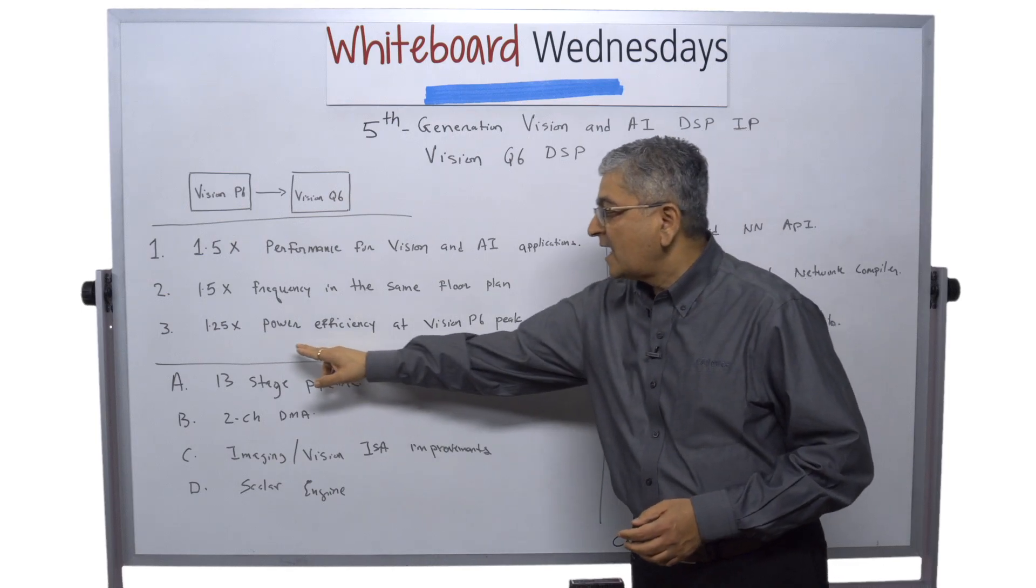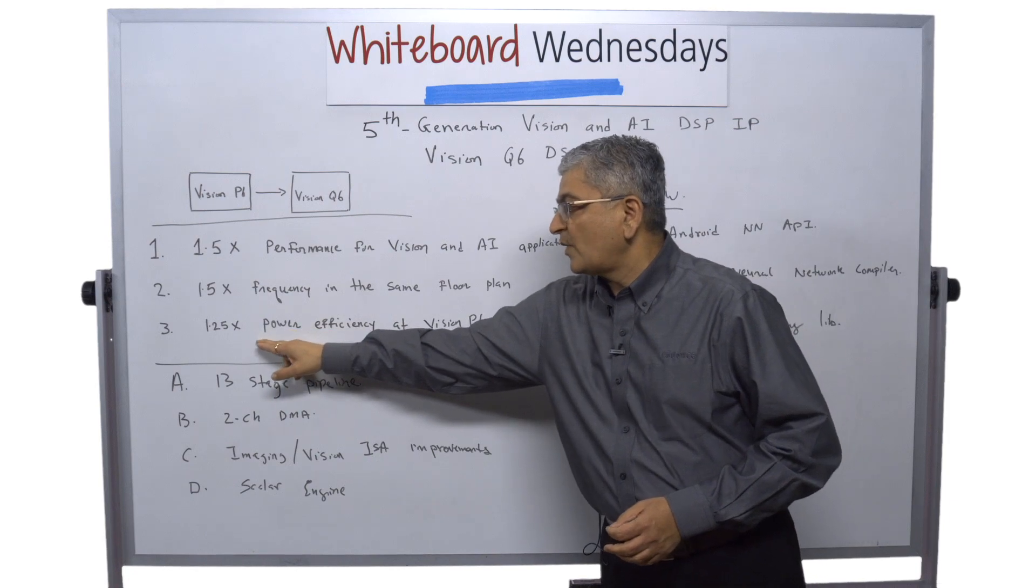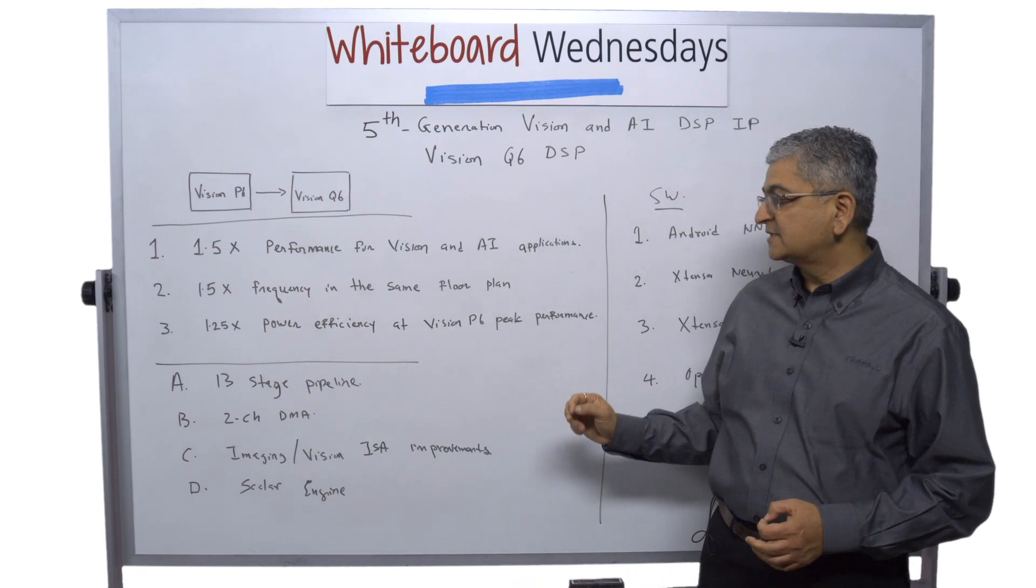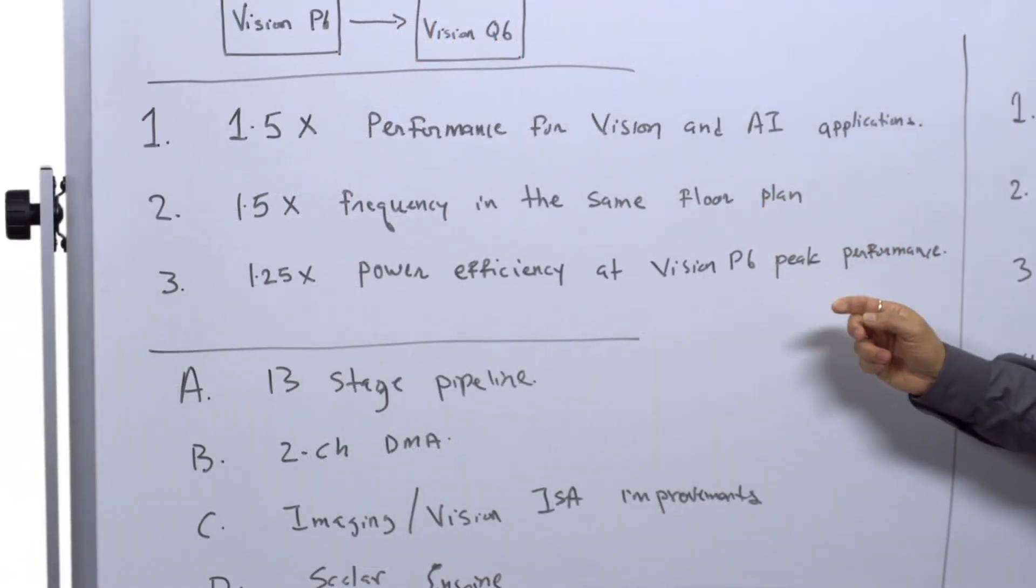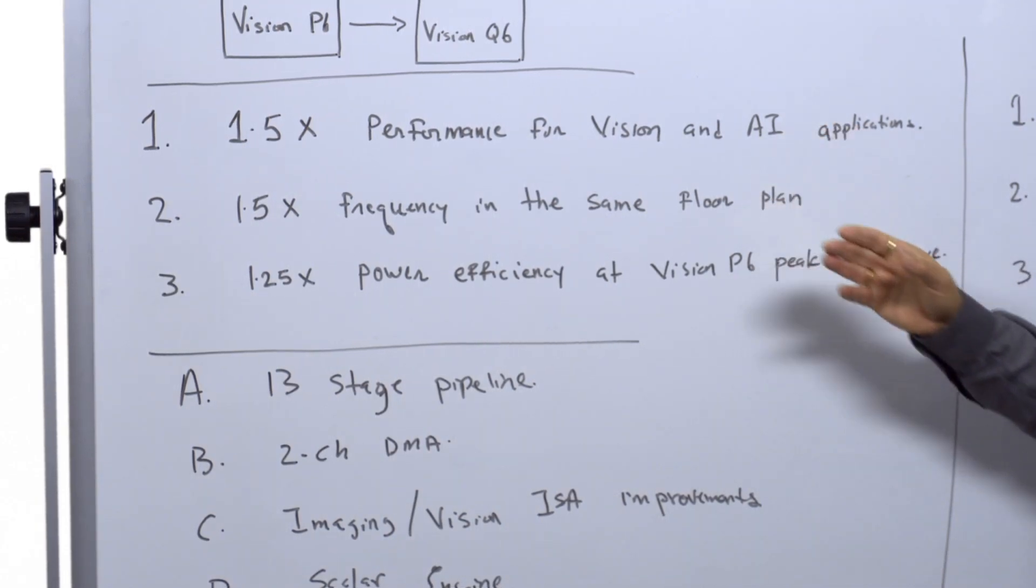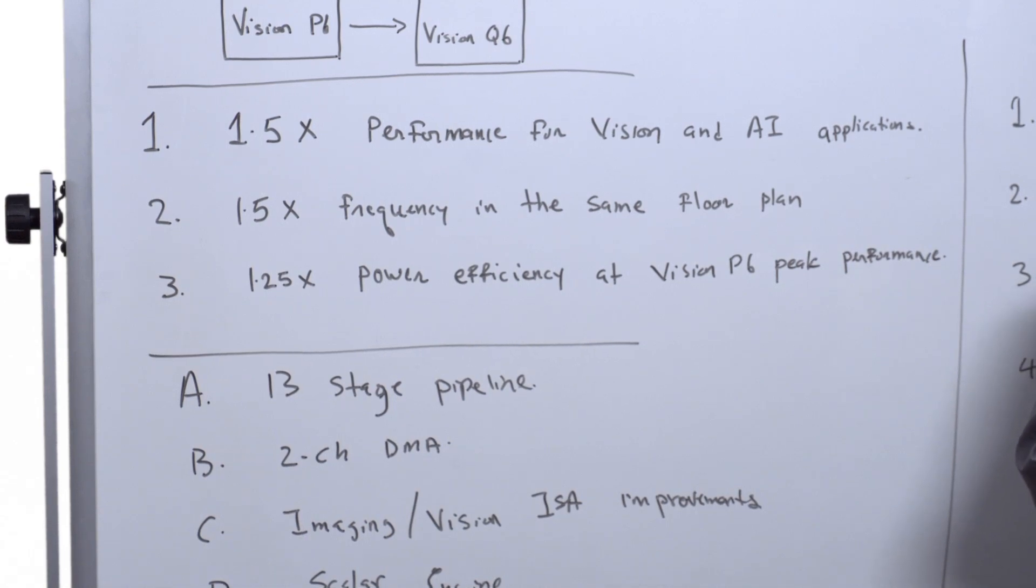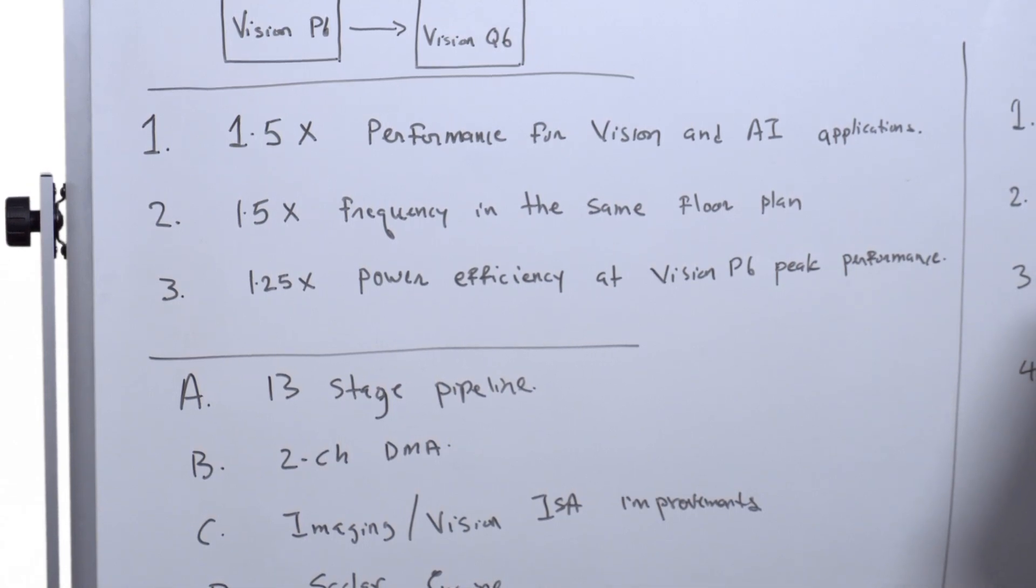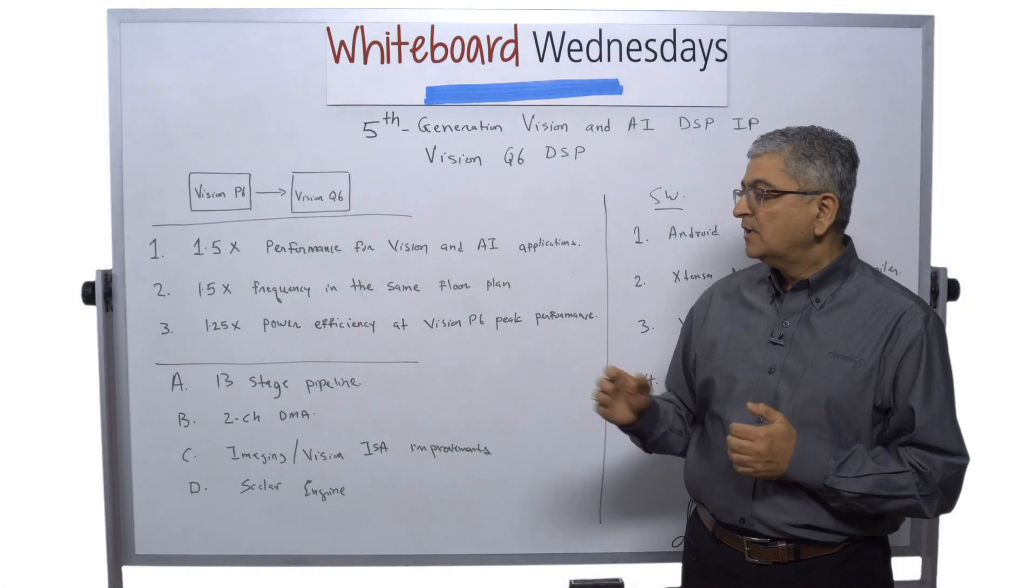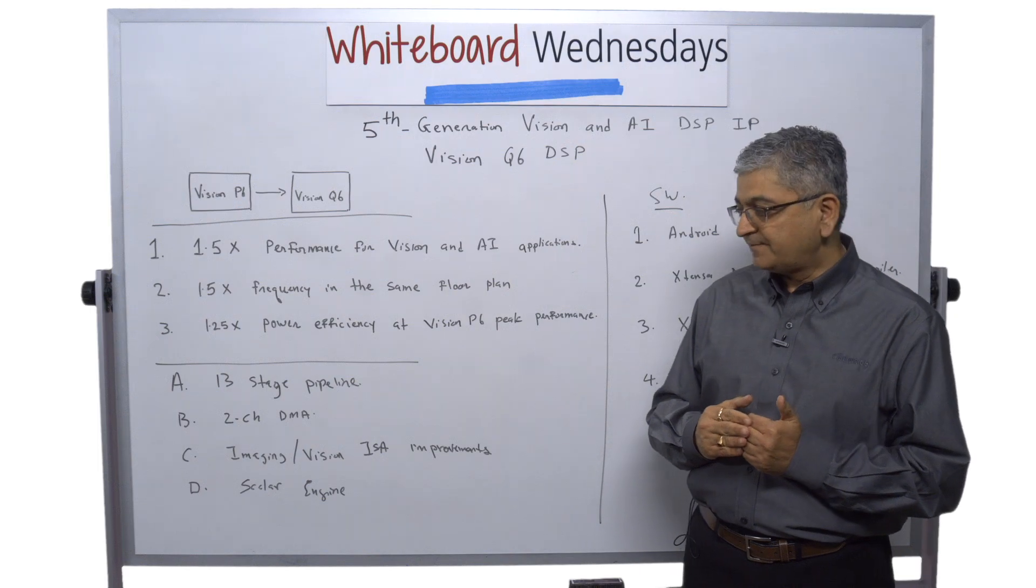So, we are not only improving the performance, but we are providing you 1.25x power efficiency at Vision P6 peak performance. All these performance parameters when we are comparing with Vision P6 are done at 16 nanometer process technology. We have chosen 16 nanometer to keep apple to apple comparison.